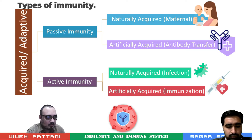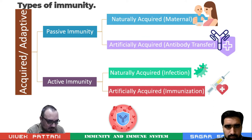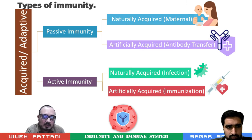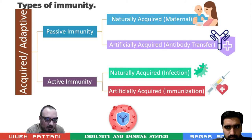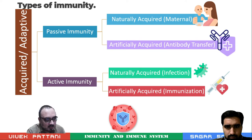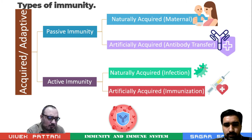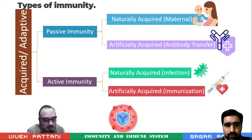This adaptive immunity is a defense system that protects the body against pathogenic microbes and other types of diseases. This type of immunity is divided into active and passive immunity. Passive immunity is divided into two types: passive naturally acquired and passive artificially acquired. An example of naturally acquired passive immunity is maternal immunity.